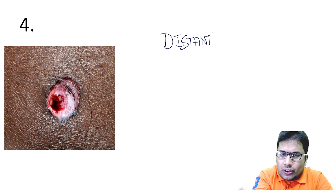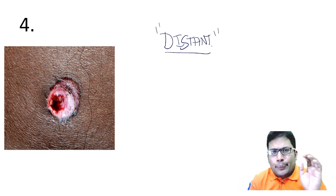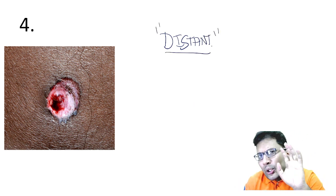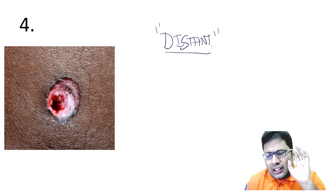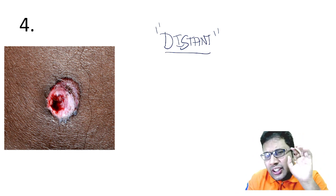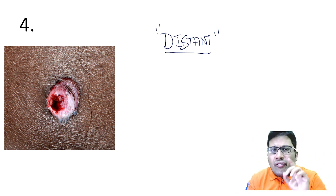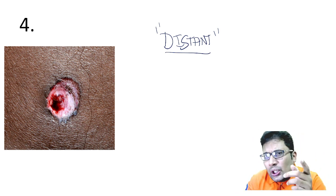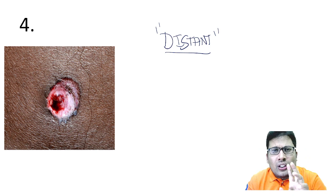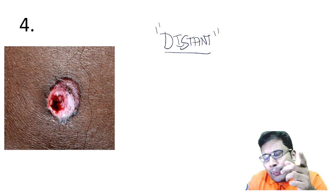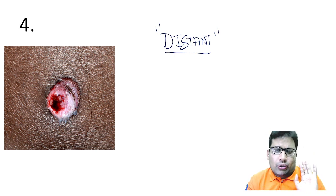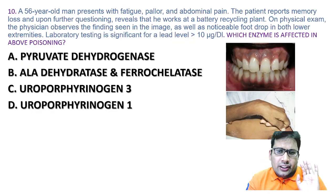To summarise the four ranges: contact range, close range, near range, distant range. Whenever you see tattooing — near shot. Whenever you see blackening — close shot.